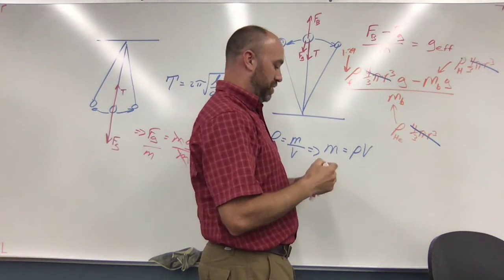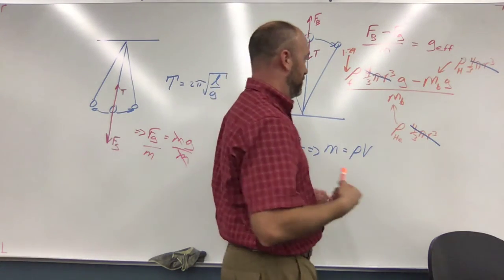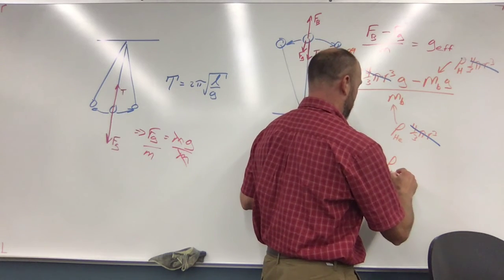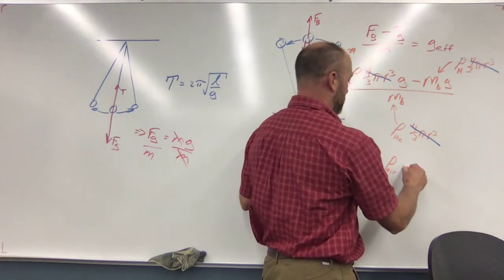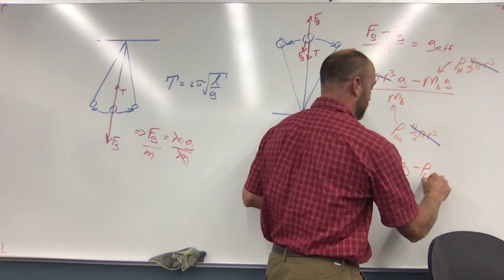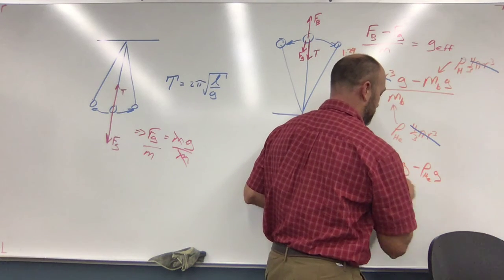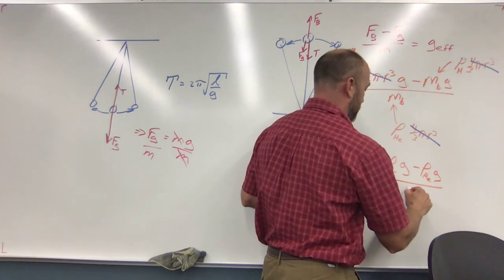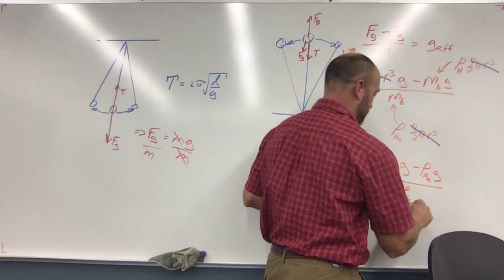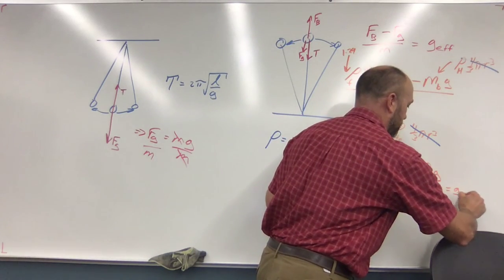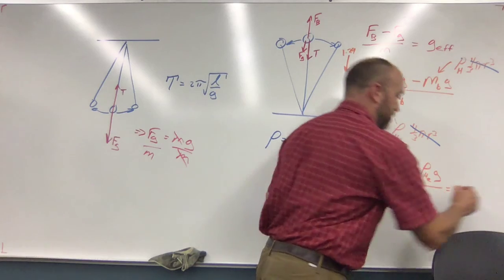So now what we're left with here is density of air (that's your 1.29) times g minus density of helium times g, divided by density of helium. And that will be the effective gravity.